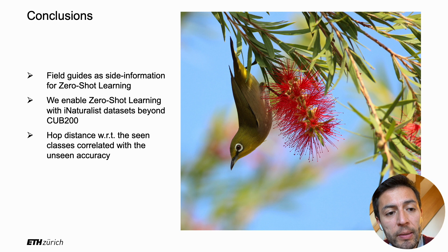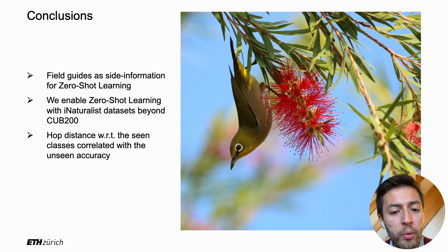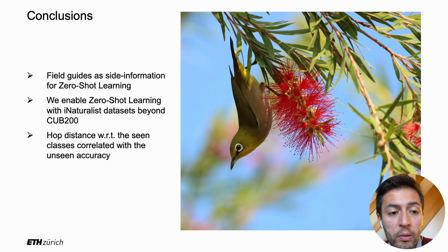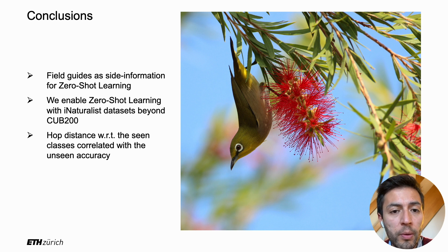To conclude, in this work we have shown how field guides are a useful side information source for zero-shot learning tasks. We highlighted how it works with bird images, but a similar approach could be applied to many other field guides. We enabled zero-shot learning with iNaturalist datasets beyond CUB200, providing a much more challenging and realistic benchmark. Finally, hop distance correlates well with accuracy, making it a meaningful split that should be further explored for zero-shot learning. Thank you.